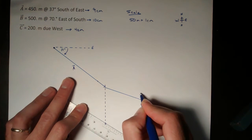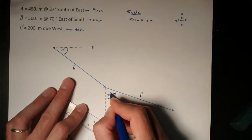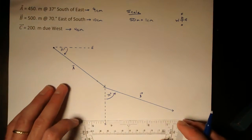So this is vector B, which is 70 degrees east of south.